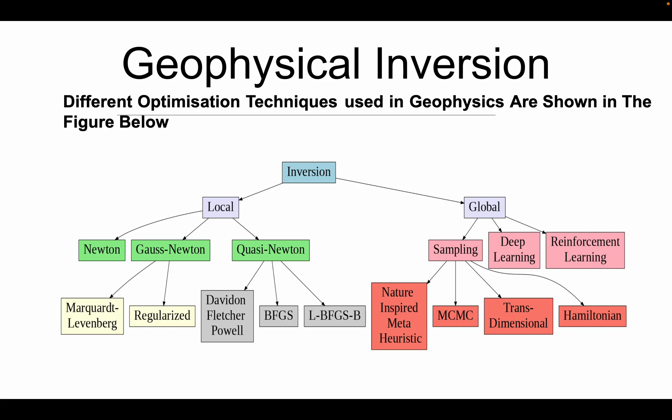For that also we have got three variations — we will talk about one but at least we should know the names. There is the Davidon-Fletcher-Powell method, then we have the Broyden-Fletcher-Goldfarb-Shanno algorithm, and then we have the Limited-memory BFGS-Bounded method.